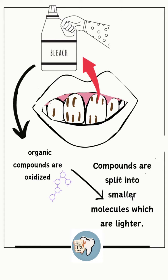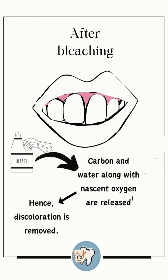Organic compounds are oxidized by the bleach into smaller molecules which are lighter. The end product of the bleaching is carbon and water, along with nascent oxygen, which are released from the discolored tooth, and hence the discoloration is removed.